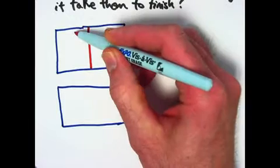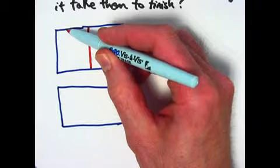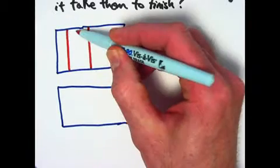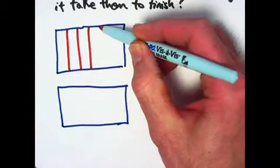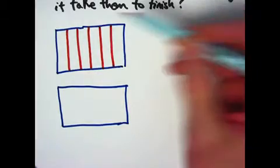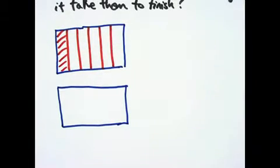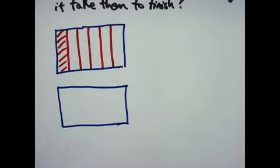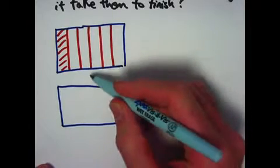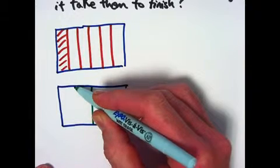That's 2 equal pieces. And for each of these I have to break those up into 3 equal pieces. So right about like this is how to split this one up into 6 equal pieces. So Greg can paint that much of the room, so to speak, in one hour.